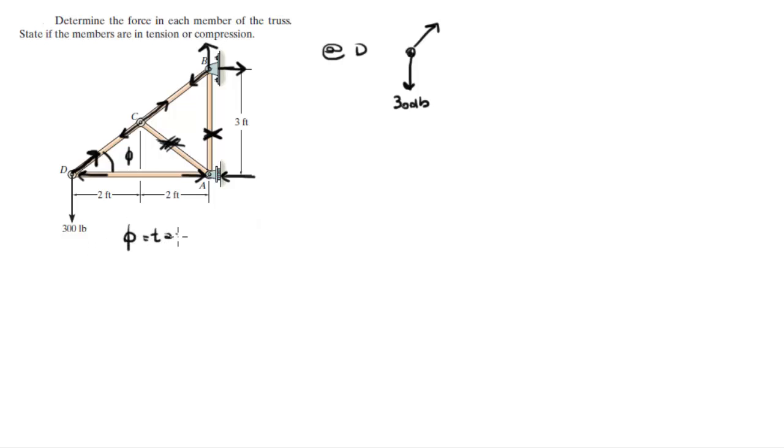Phi is equal to the tangent inverse of 1.5 over 2, which comes out to be 36.9 degrees. So, this is phi.